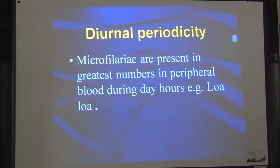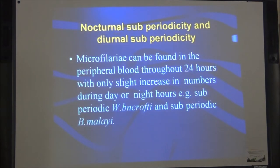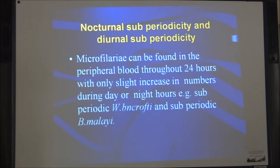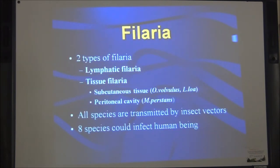Diurnal periodicity is when microfilaria are present in greatest numbers in peripheral blood during day hours — for example, in Loa loa. Nocturnal sub-periodicity and diurnal sub-periodicity are types in which microfilaria can be found in the peripheral blood throughout 24 hours with only a slight increase during day or night hours. Sub-periodic W. bancrofti and sub-periodic Brugia malayi show this type of periodicity.